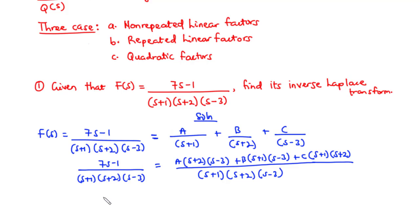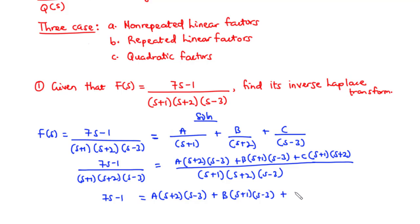Equating the numerators, we have: 7s - 1 equals A times (s+2)(s-3) plus B times (s+1)(s-3) plus C times (s+1)(s+2). Next, we are going to find the values of A, B, and C, which are real constants. We will substitute values of s such that two of the constants go to zero so we can find the other one.